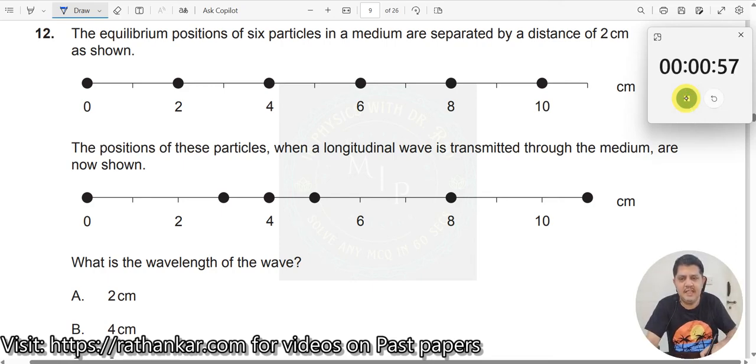Question number 12. The equilibrium positions of 6 particles in the medium are separated by a distance of 2 cm. So every point here is equispaced.